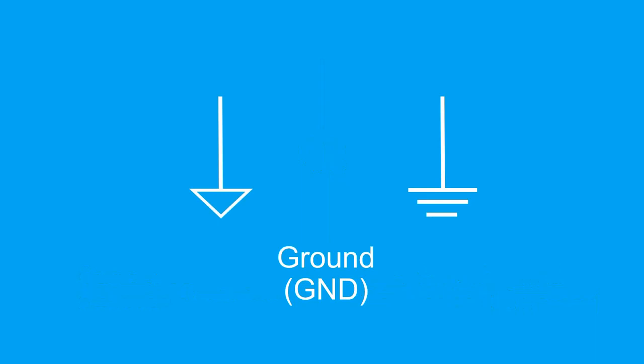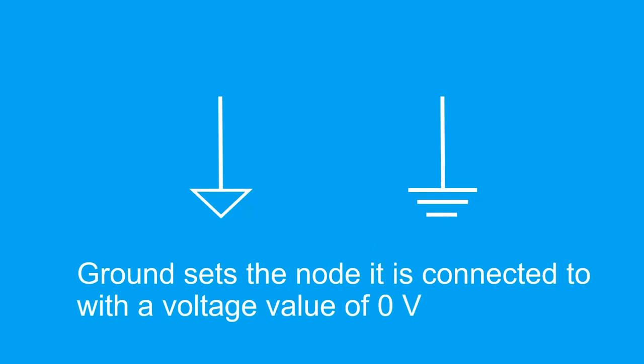The last component of a circuit we need to talk about is the ground. The ground is denoted by either of these two symbols. The ground indicates that the node that the ground is connected to has a voltage value of 0 volts.